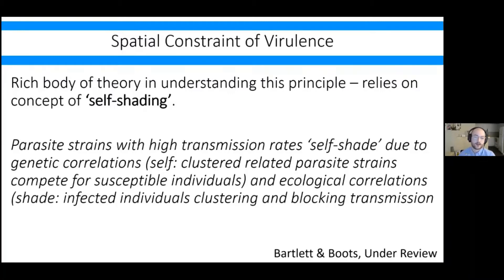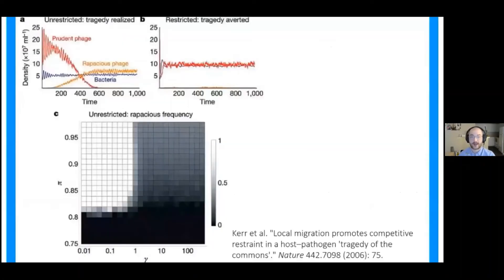Self-shading is the more proximate mechanism by which space limits virulence and punishes parasites or pathogens who try to spread too quickly and are too deadly. Parasites with high transmission rates self-shade due to genetic and ecological correlations — whereby genetically, clustered related parasite strains compete for susceptible individuals. In a very structured system where transmission is mostly local, parasites are often competing with clones of themselves or highly related individuals for the same resources, which reduces competition through kin selection and maintains lower virulence. Similarly, infected individuals typically cluster around each other and block transmission. If an entire population is infected, there are no new susceptibles to infect, which reduces R0 and selects for lower transmission and less virulence.